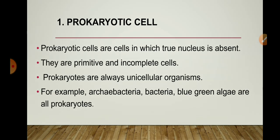Now we will discuss prokaryotic and eukaryotic cells. 'Pro' means primitive and 'karyon' means nucleus, so a cell having a primitive or undeveloped nucleus is called a prokaryotic cell. Prokaryotic cells are cells in which a true nucleus is absent; the nuclear region is poorly defined due to the absence of a nuclear membrane. This undefined nuclear region contains only nucleic acid and is called a nucleoid. In prokaryotic cells, membrane-bound organelles are also absent. Prokaryotes are always unicellular organisms, such as archaea, bacteria, and blue-green algae.